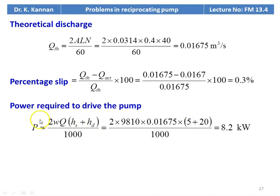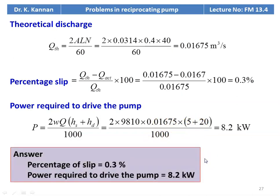The power required to drive the pump: P = 2 × W × Q × (Hs + Hd) / 1000. The factor 2 again stands for the double acting pump. Substituting: 2 × 9810 × 0.01675 × (5 + 20) / 1000 = 8.2 kilowatts. The answers: percentage of slip = 0.3%, power required to drive the pump = 8.2 kilowatt.